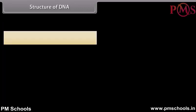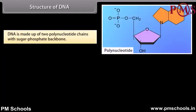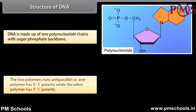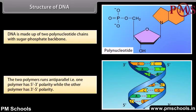Structure of DNA. DNA is made up of 2 polynucleotide chains with a sugar-phosphate backbone. The two polymers run anti-parallel — that is, one polymer has 5' to 3' polarity, while the other polymer has 3' to 5' polarity.